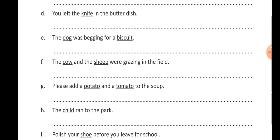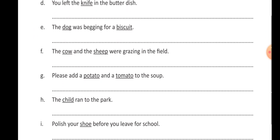F number: the cows and sheep. Sheep is the same in both singular and plural. The cows and the sheep were grazing in the field. G number: please add potatoes — the 'a' is removed when making potato plural — and tomatoes — P-O-T-A-T-O-E-S and T-O-M-A-T-O-E-S — to the soup.